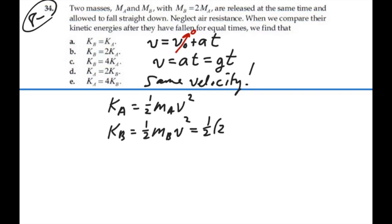Which is going to be one half times two times the mass of A velocity squared, which would be two times one half mass of A velocity squared, or two times the kinetic energy of A.